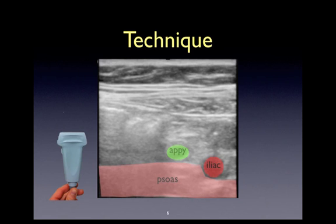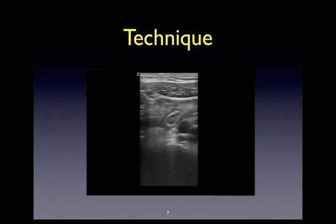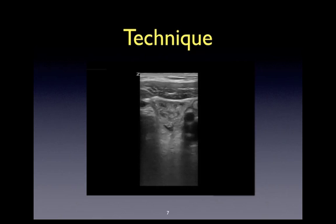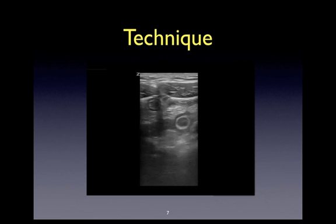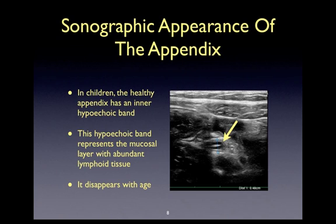Here is a beautiful example of appendicitis. Note the targetoid appearance that the appendix will take in cross-section. Visualizing the appendix can be challenging, since the structure can easily be lost within the contents of the right lower quadrant.